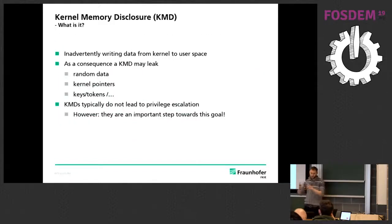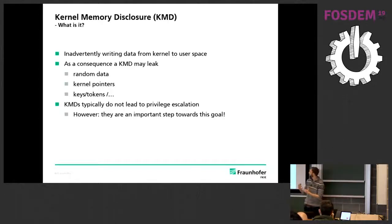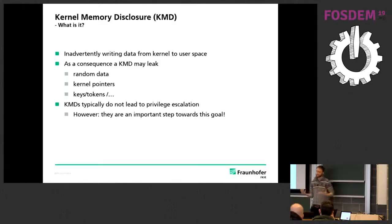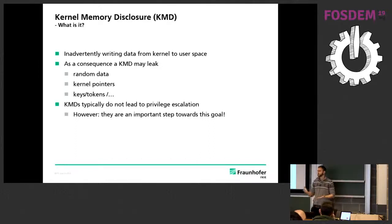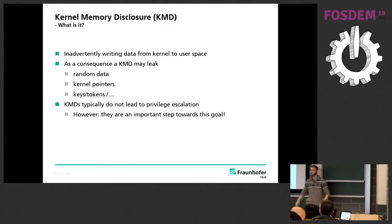This talk is about kernel memory disclosures. One could say they are inadvertently writing data from kernel to user space — data that does not belong there but was written there by accident. As a consequence, first you may leak random data, but for an attacker that's useless. But then interesting things can happen — for example, you may leak kernel pointers or parts of a kernel pointer.